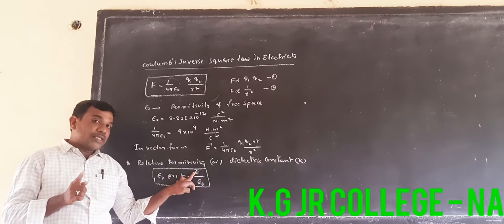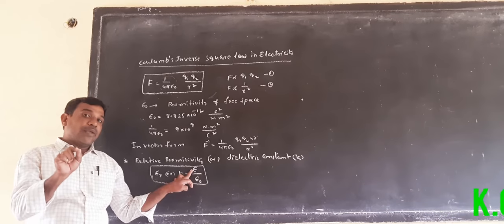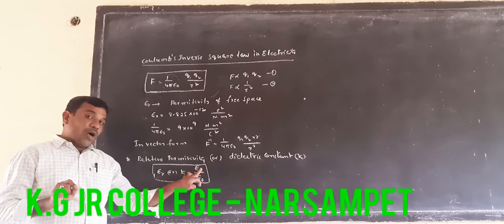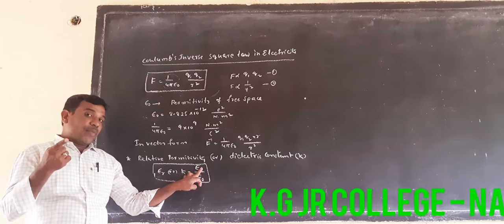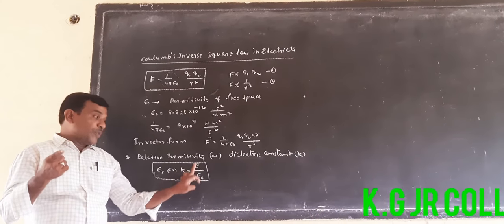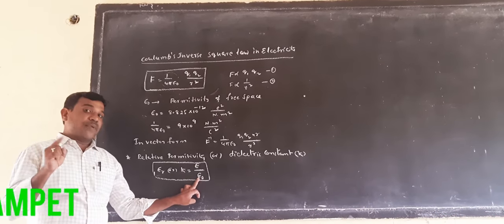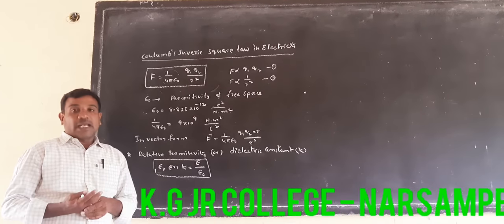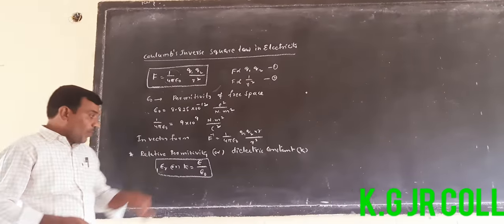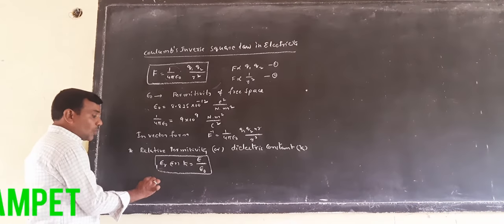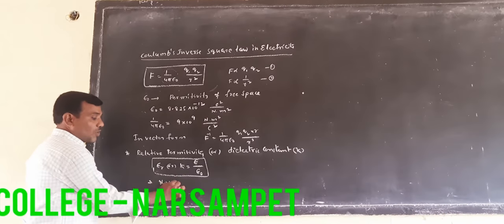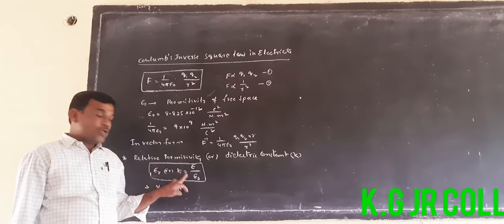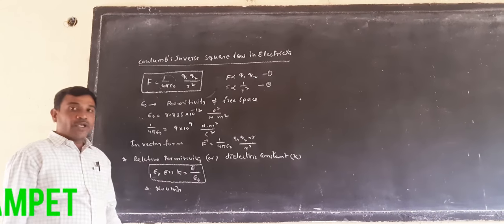Here, epsilon means permittivity of any medium. Relative permittivity has no units, because it is the ratio of the same quantities — permittivity divided by permittivity — so the units cancel.